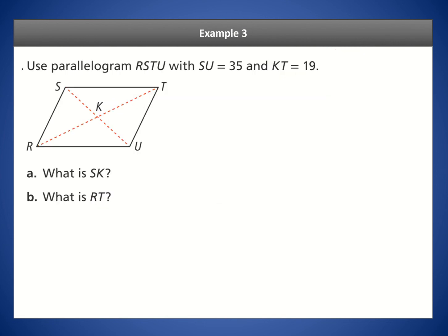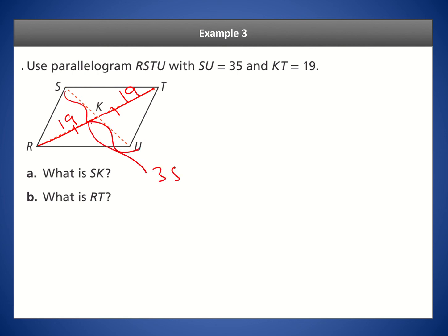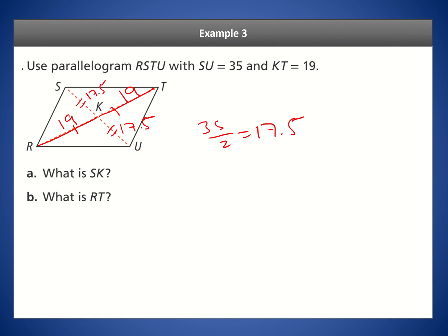Let's look at an example. For a parallelogram with SU equals 35 and KT equals 19: since the diagonals bisect each other, RK also equals 19. Because the full diagonal SU is 35, each half equals 35 divided by 2, which is 17.5. So SK equals 17.5 and RT equals 19 plus 19, which is 38.